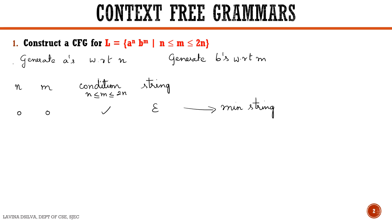Next I will take n = 0 but m = 1. It will be 0 ≤ 1 ≤ 0. Is the condition satisfied? The condition is not satisfied, so we cannot have a string generated here. Next I will take n = 1 and m = 0. We get the condition 1 ≤ 0 ≤ 2. This is also not correct, so we cannot generate a string in this case.